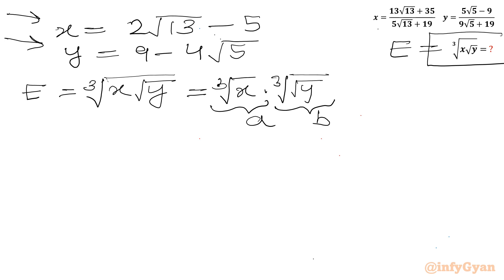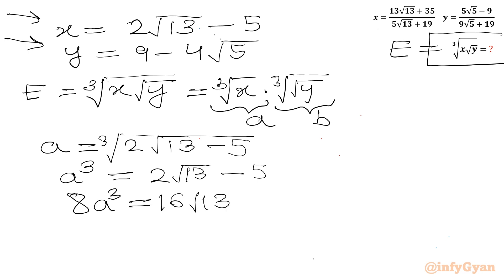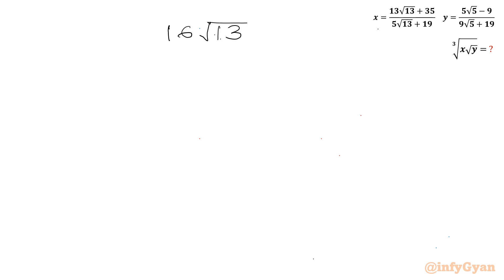So let us calculate a first. x and y both values are here. So I will write a equal to ∛x, and x is 2√13 − 5. Consider cubing both sides: a³ = 2√13 − 5. Now I will multiply both sides by 8. So 8a³ = 16√13 − 40. Let me write here: 16√13 − 40 equals (2a)³.